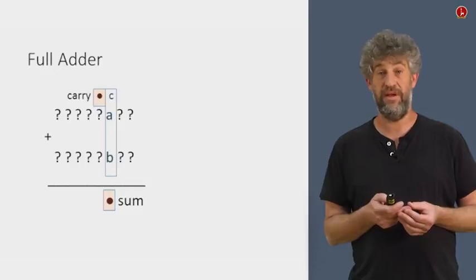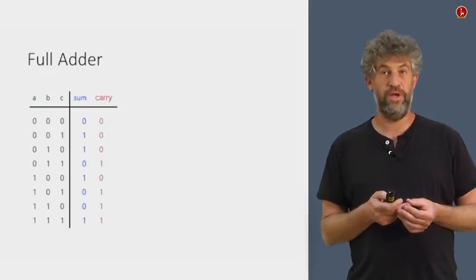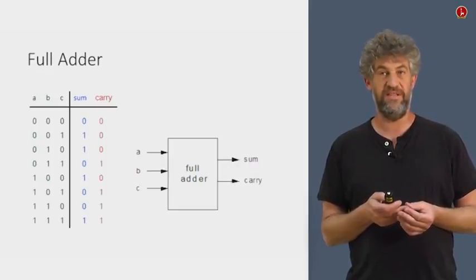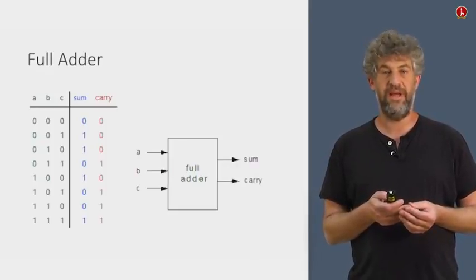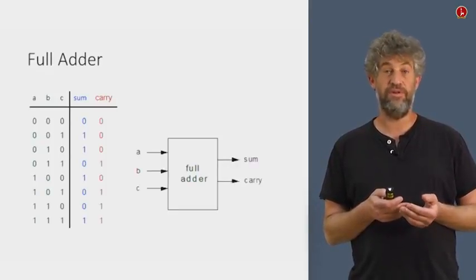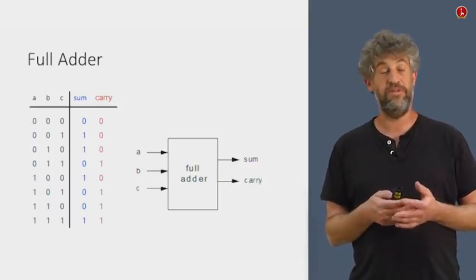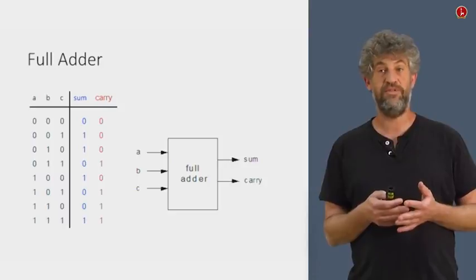Again, now we get a Boolean gate, a chip if you wish, that we know exactly its functionality. We have three inputs, A, B, and C, two outputs, sum and carry. And there are eight possibilities of the inputs, and for each of them we can very well know what the outputs are. So that's another chip, and that chip is called the full adder.